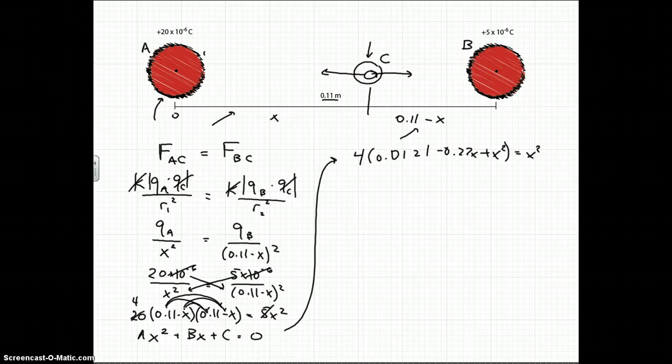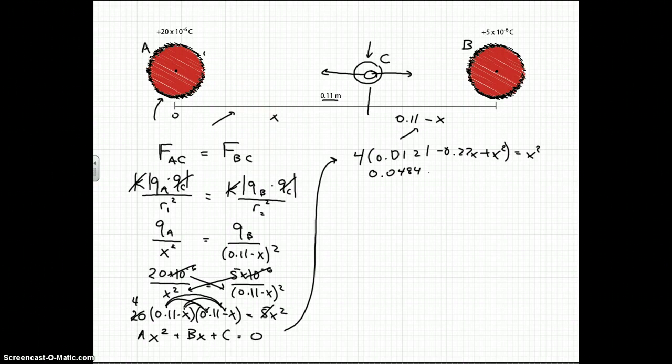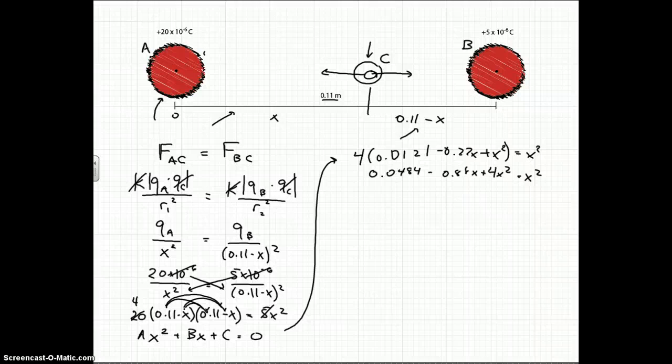So then you just go ahead and from there you can multiply the 4 through and so you have 0.0484 minus 0.88x plus 4x squared is equal to x squared. And so now we need to get that x squared on the other side so we can have a zero on that side. So you just subtract that and you're left with 3x squared. So you can just rewrite this and rearrange things.